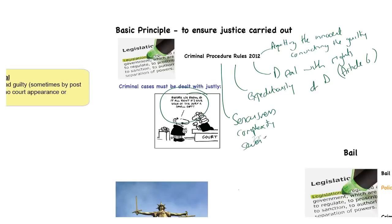Courts must consider the severity of the consequences for the defendant and others affected. For example, if an offence is committed by an 85-year-old man, five years in prison could see the end of his life — so you have to judge the consequences of the sentencing you are about to pass. They must also consider the needs of other cases: what other cases need dealing with, and which is the most important.